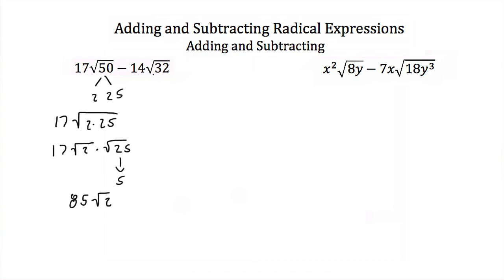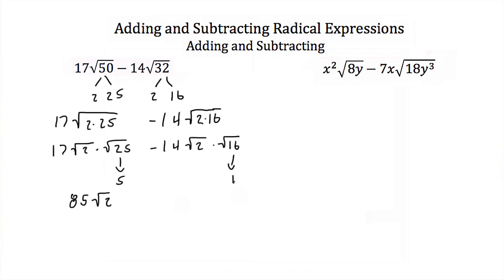For the 32 under the square root in our second term, I can break it into 2 and 16. So we're subtracting 14 times the square root of 2 times 16, or 14 times the square root of 2 times the square root of 16. The square root of 16 is 4, and 4 times 14 is 56 — so we're subtracting 56 square roots of 2. Now we have like radicals of square root of 2. 85 minus 56 is 29, giving us 29 square roots of 2.